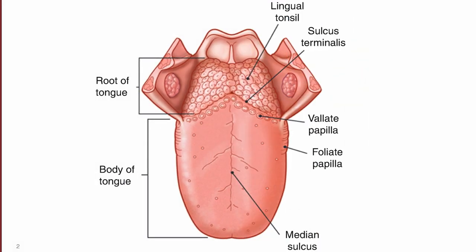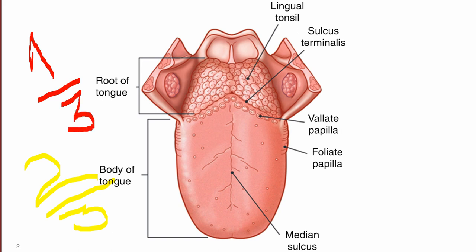We'll cover the developmental events for the development of mucous membrane and taste buds of the tongue, discuss the development of the skeletal muscles of the tongue, and end our discussion with a brief overview of the congenital anomalies associated with the development of the tongue. We start our discussion from the adult tongue. Anatomically, the adult tongue can be divided into the anterior two-thirds, also known as the body of the tongue, and the posterior one-third, also known as the root of the tongue.